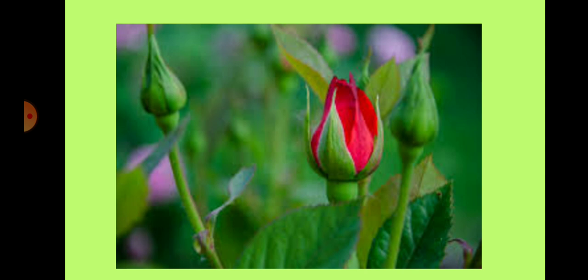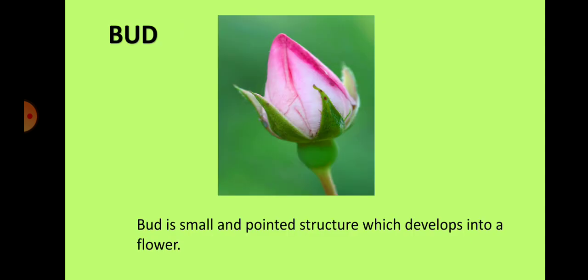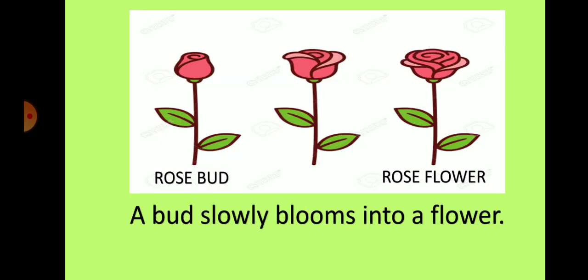Before a flower blooms, the petals are covered by these green structures. This is known as a bud. A bud is a small and pointed structure which develops into a flower. Look here at the picture of a rose bud which is gradually blooming into a rose flower. A bud slowly blooms into a flower.